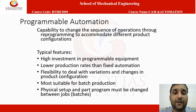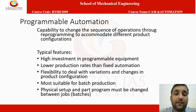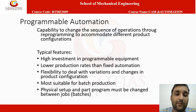Programmable automation is capable of changing the sequence of operations through reprogramming to accommodate different product configurations. Typical features include high investment in programmable equipment, lower production rate than fixed automation, flexibility to deal with variation and change in production configuration, most suitable for batch production, and physical setup and part programming must be changed between jobs.